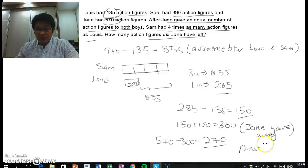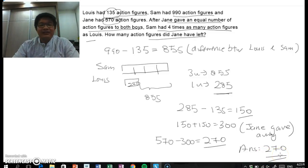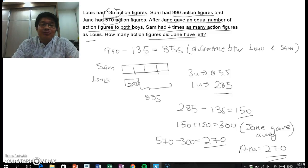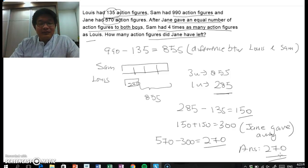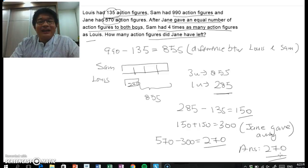And there you have it, the answer is 270 action figures. So there you have it, a model method to solve a relatively simple question for primary 5. I hope this video helps. Do subscribe and like and share my videos with as many people as you would like to. After all, sharing is caring and do help spread the good word around. And until the next lesson, until the next week, I will make another video. In the meantime, take care of yourselves and have a good day ahead. Bye.